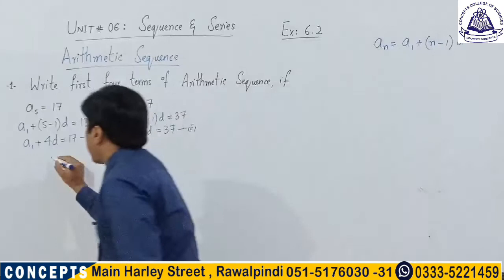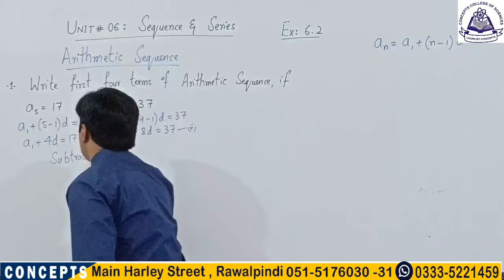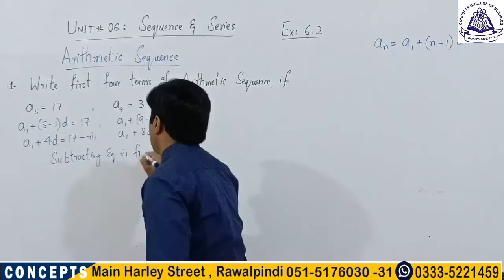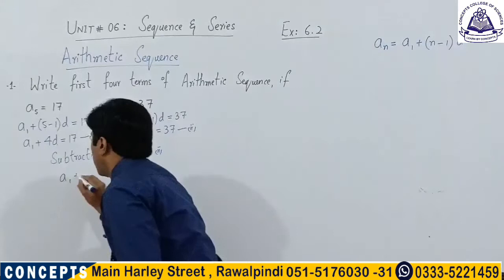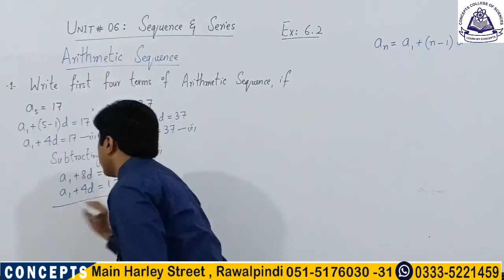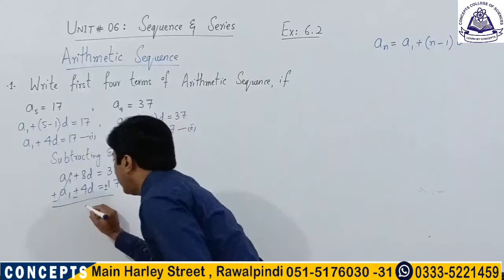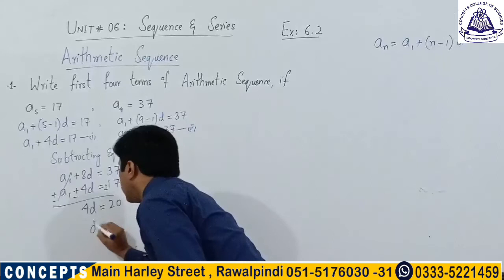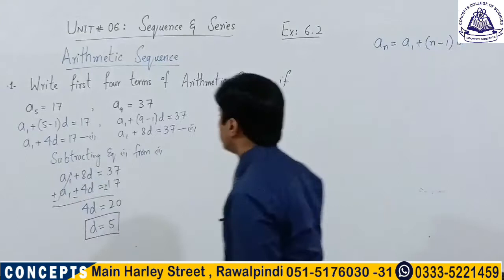Subtracting equation 1 from equation 2: (a1 + 8d) − (a1 + 4d) = 37 − 17. On solving these two equations we get 4d = 20, so d = 5, which is the common difference.